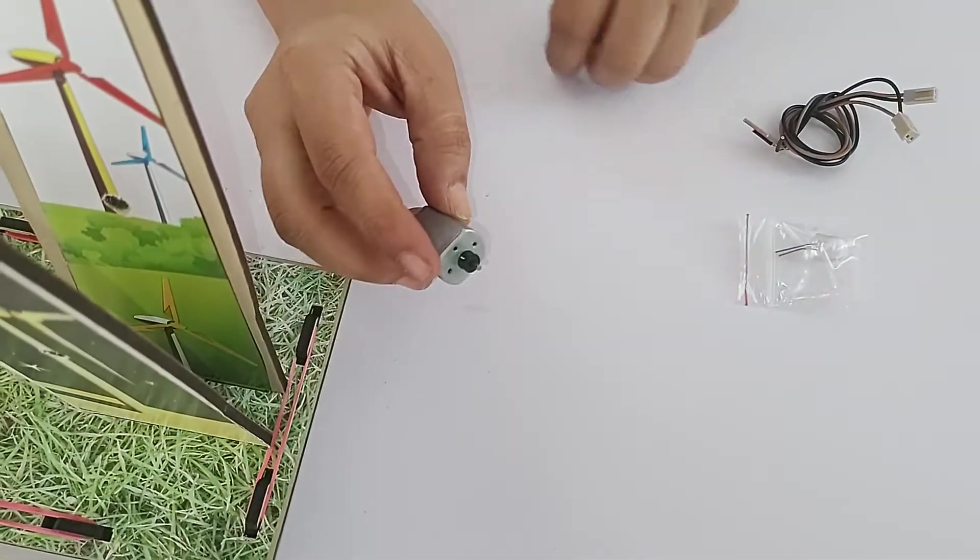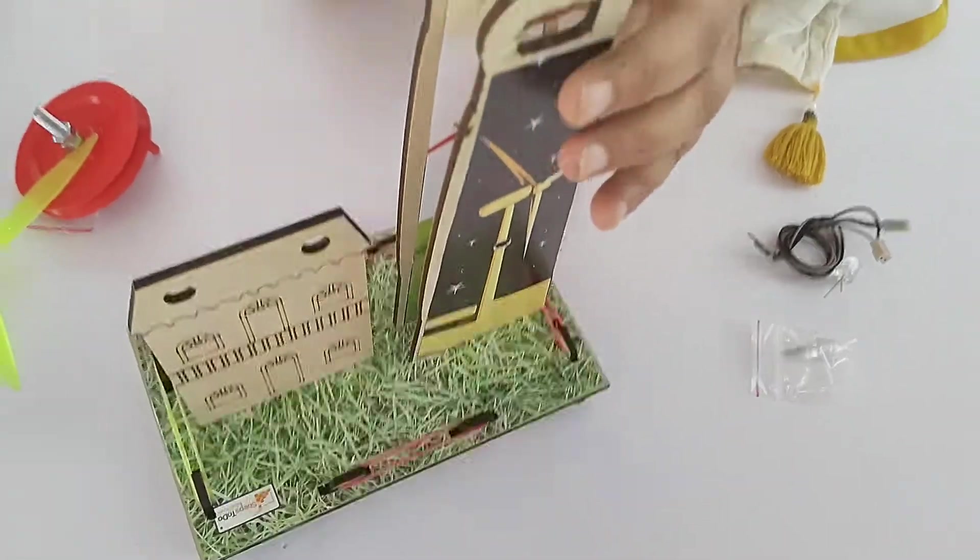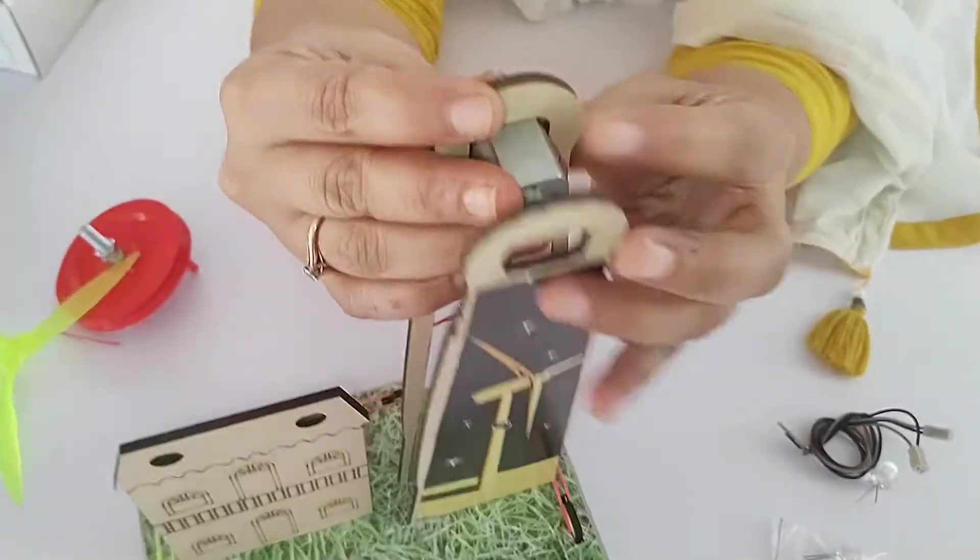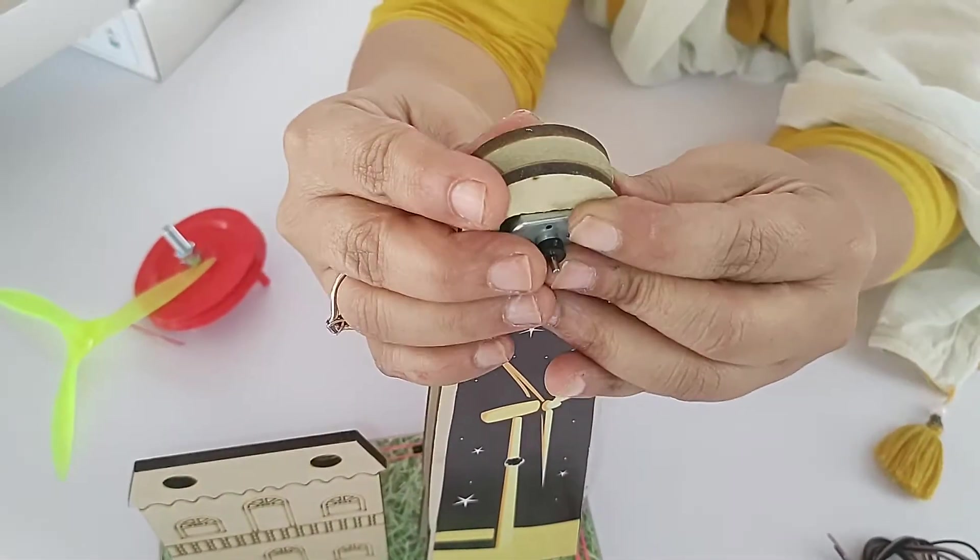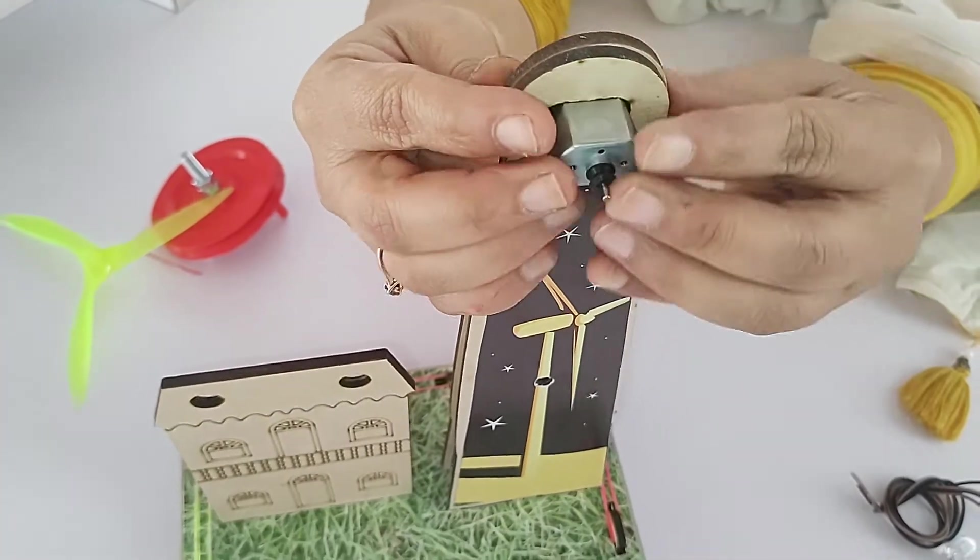Now what we will do, we will put this motor into these two holes which are provided on the top of the tower. Insert it into one hole, press it, then insert it into another hole. It's very easy. And now you just mix these two towers.